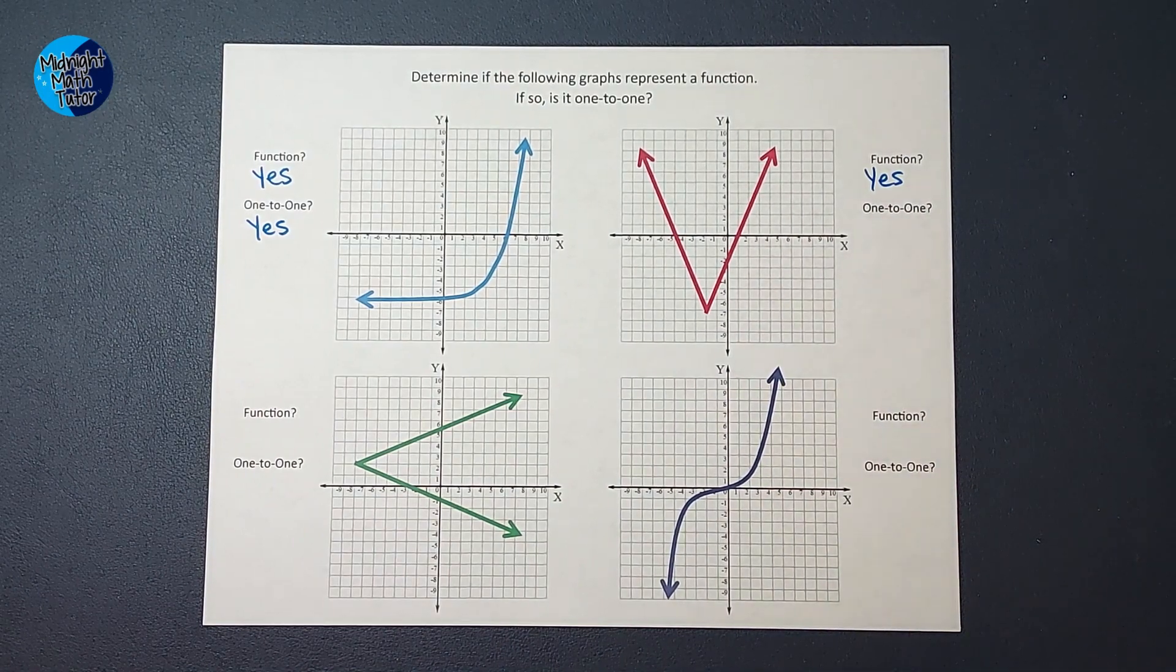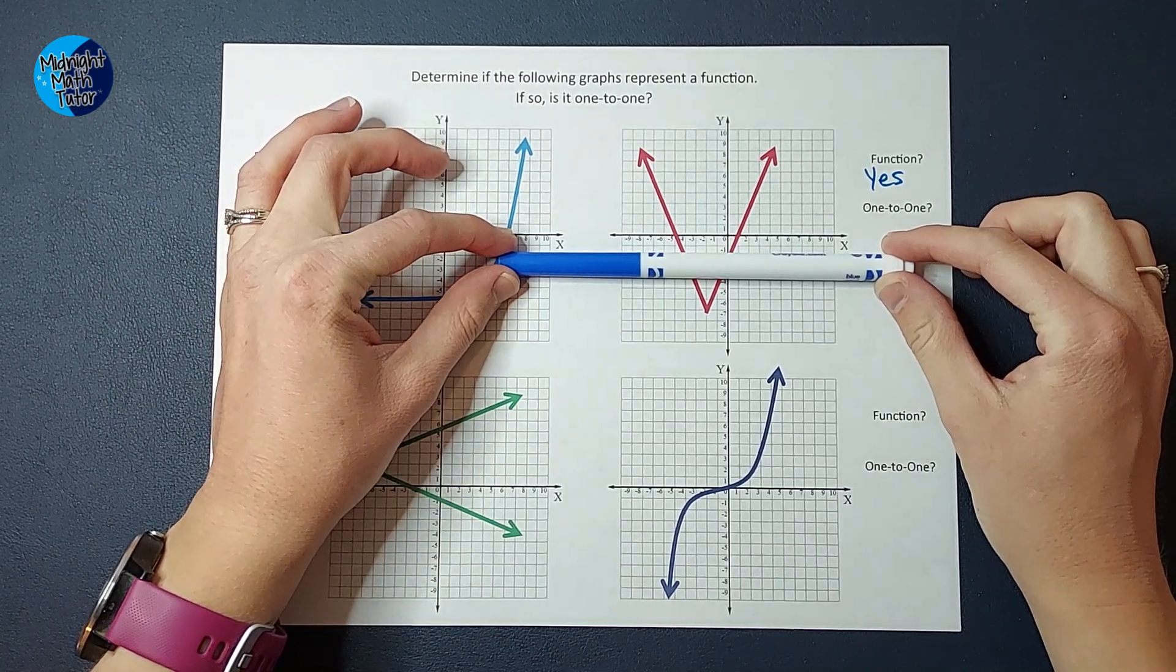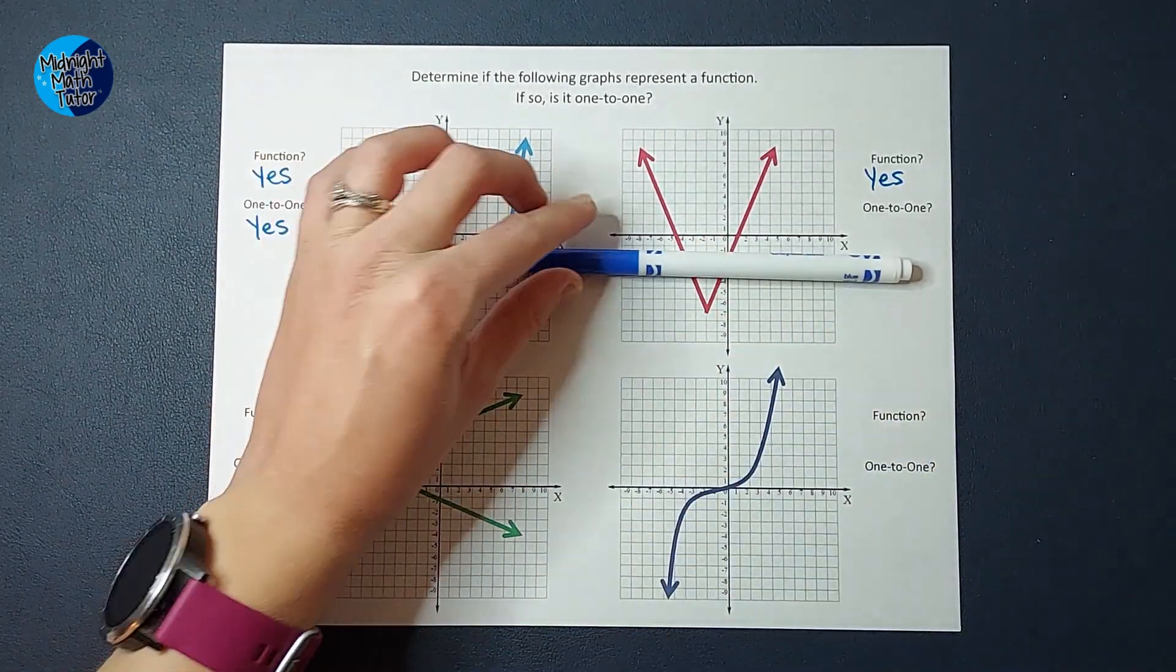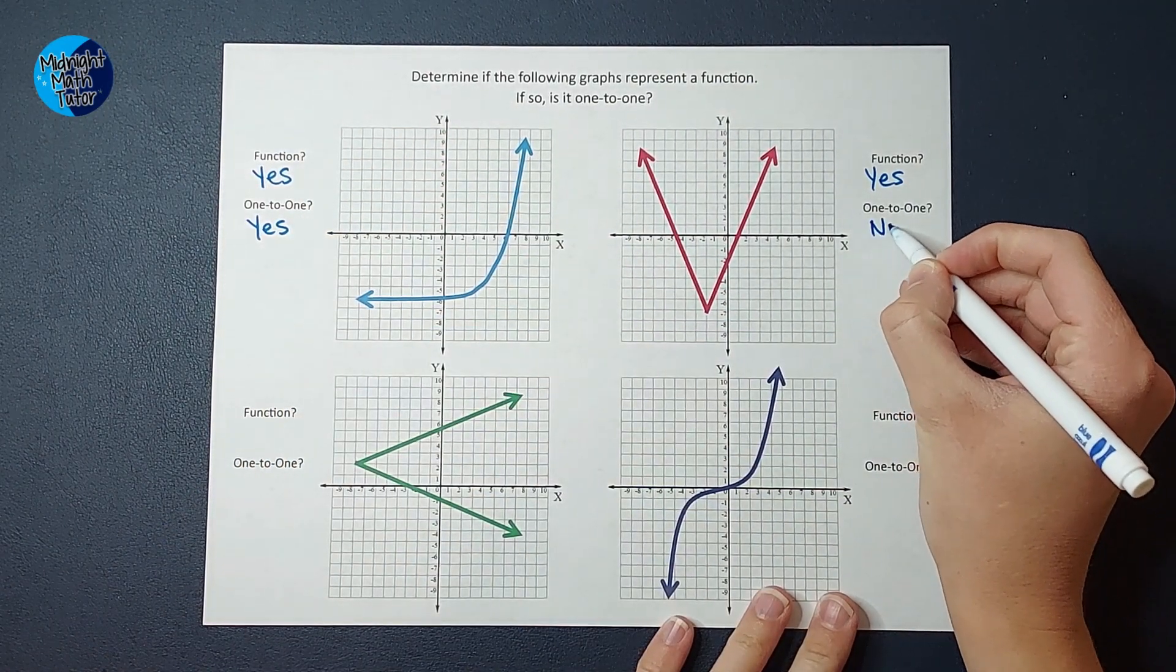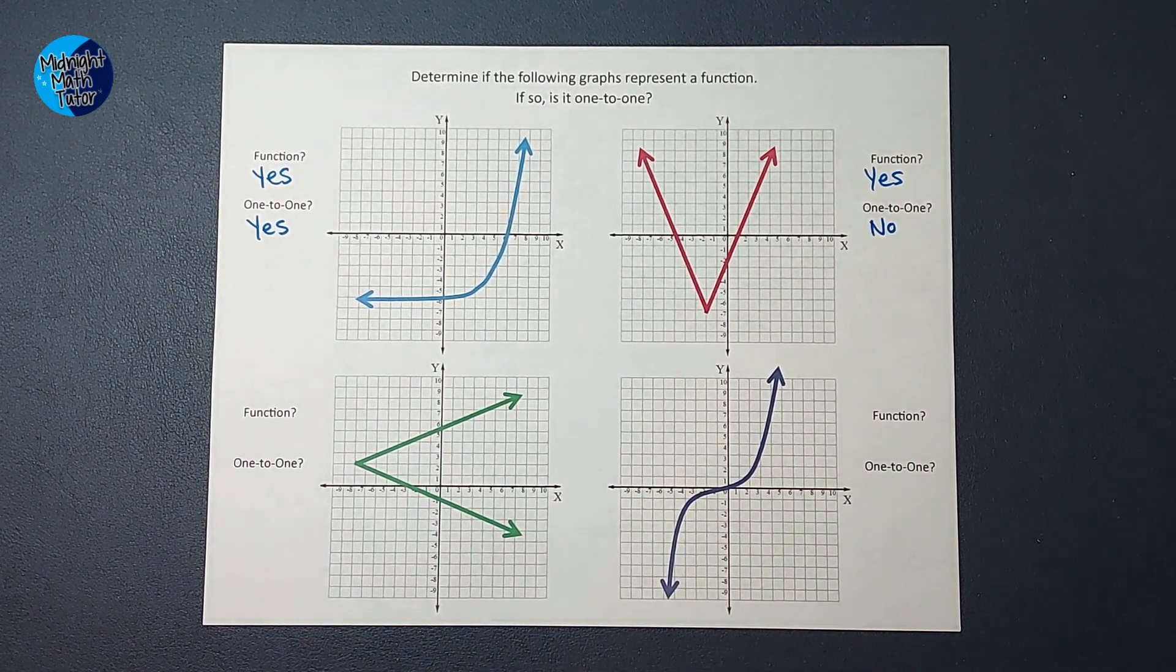Is it one-to-one? I'm going to do my horizontal line test, and right at the get-go, you can see, it's hitting two points at once. So no, this function is not one-to-one. It is a function, but it's not one-to-one.